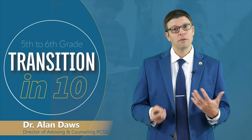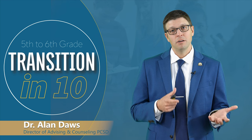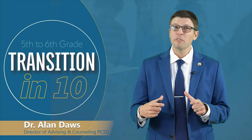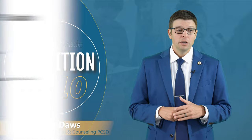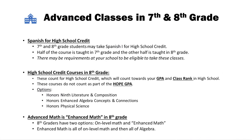As far as seventh and eighth grade goes, I want to give you just an overview. You could take additional advanced classes in seventh and eighth grade. Spanish in seventh and eighth grade counts as a high school credit course. There may be requirements just to get into this, so keep that in mind. Half of Spanish 1 is taken in seventh grade and the other half in eighth grade, and those are high school credit courses that count towards your graduation and high school GPA.